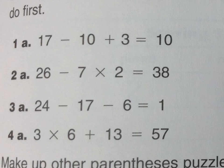So for homelink 7.4 you've got to figure out where to put the parentheses to make this number model correct. So would I put it around 17 minus 10 or around 10 plus 3? Let me just try something. So this would give me 13. 17 minus 13 equals 10. That will not work.